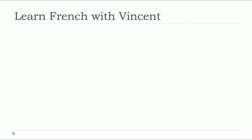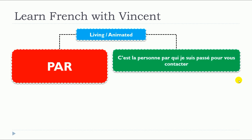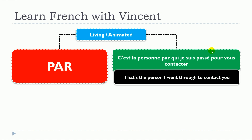So the first one: féminin singulier. PAR will be the preposition of this video. We'll have two different cases. The first one will be if we want to combine it with a living or animated thing. For example: C'est la personne — la personne is a living thing, it's feminine and singular. After that, we put the preposition PAR, and then the pronoun we will use will be QUI. C'est la personne par qui je suis passé pour vous contacter. Remember: for living things, we use QUI.